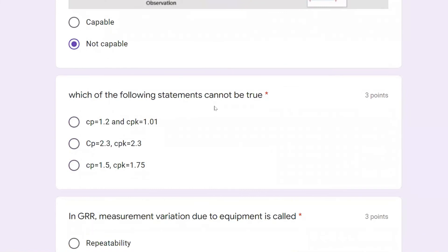Which of the following statements cannot be true? Cp equals 1.2, Cpk equals 1.01 is possible because Cpk is less than or equal to Cp. Cp equals Cpk is also possible if the process is centered. Cp is 1.5 and Cpk is greater than Cp, this is not possible. So this cannot be true.